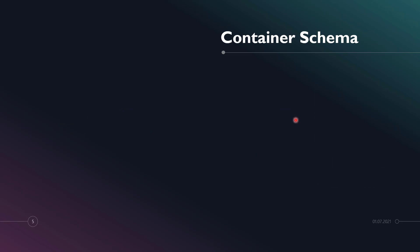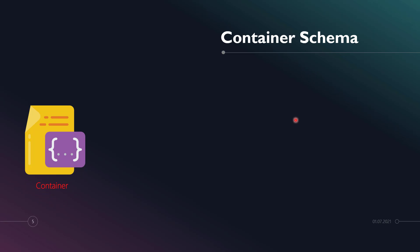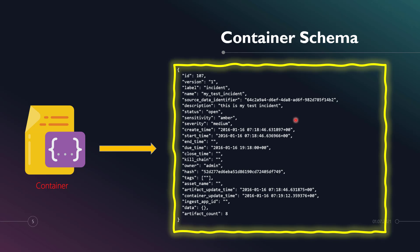Let's look at the container schema. Technically, a container is a JSON object in Splunk Phantom. This schema — taken from Splunk documentation — has a proper structure with key-value pairs for a general container. One important field to notice is the level field; in this example the level was set to 'incident'.